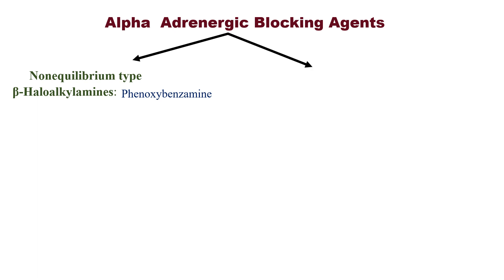Example of beta-halo alkylamines: phenoxybenzamine — alkylamine, benzamine, amine — the last word is the same. Another category of alpha adrenergic blocking agents is the equilibrium type.